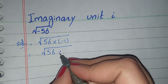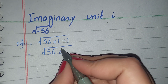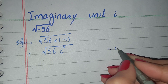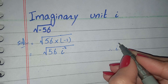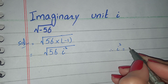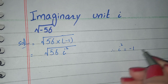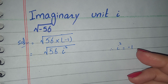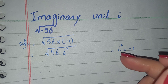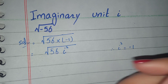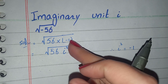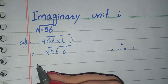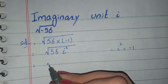In the next step, in place of negative 1 we can write i² (iota squared), because we know that i² equals negative 1. So negative 1 also equals iota squared, and we will write iota squared in place of negative 1.